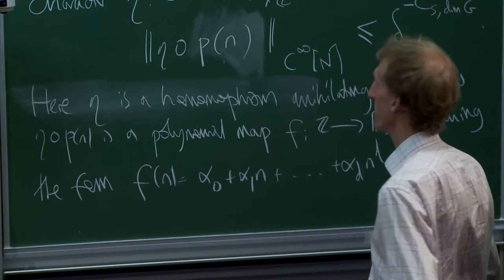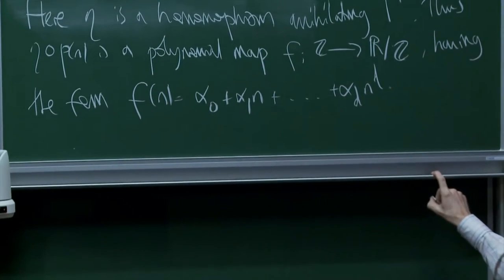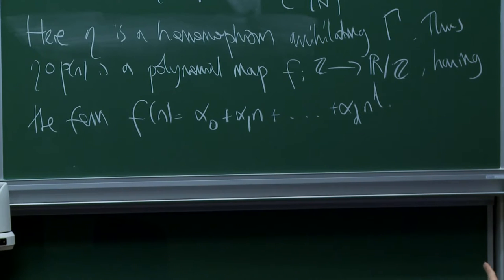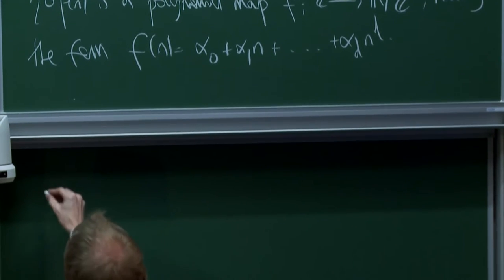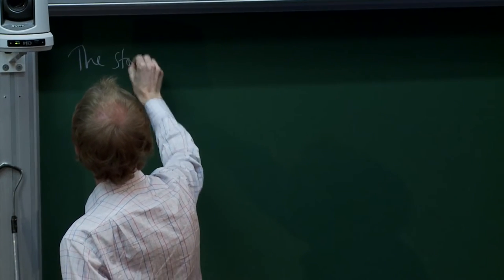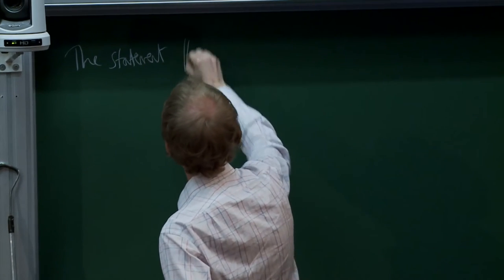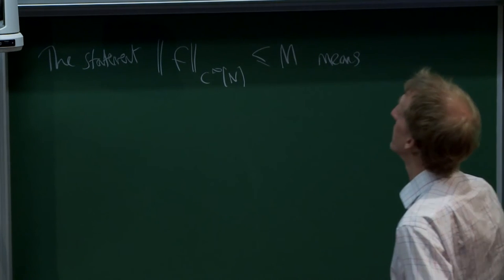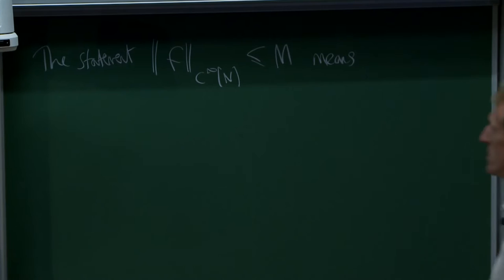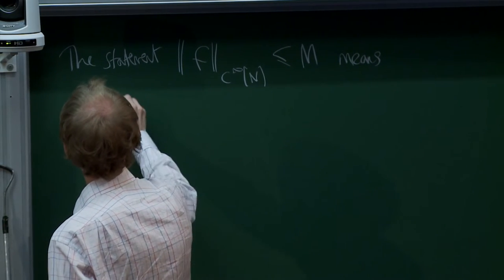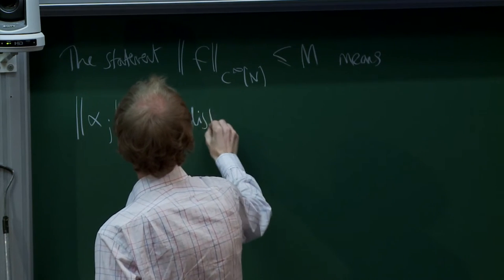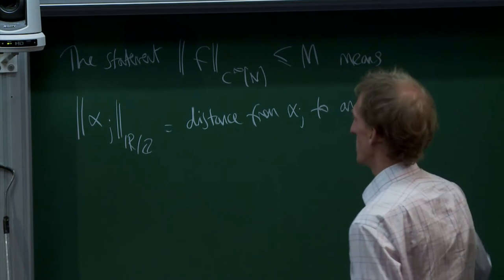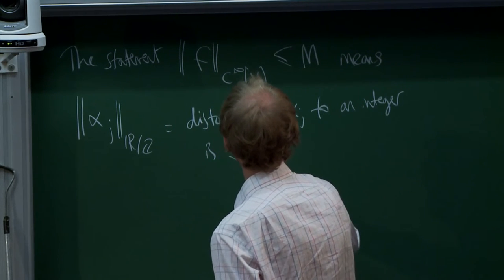To say that f has smoothness norm at most M means that the coefficients are very close to integers — specifically that ||alpha_j||_{R mod Z}, the distance from alpha_j to an integer, is at most M / N^j for every j. So let me tell you how this specializes down to even some abelian settings.